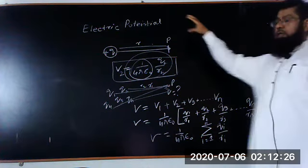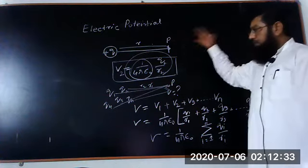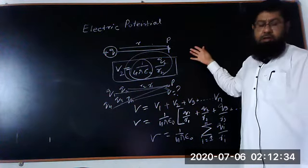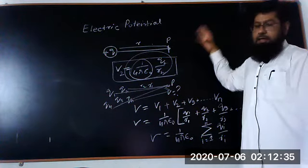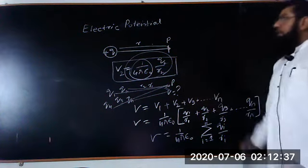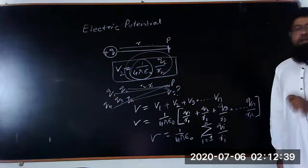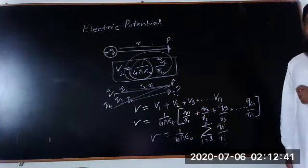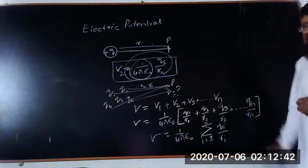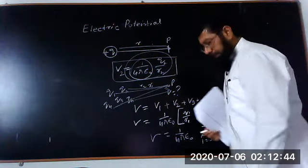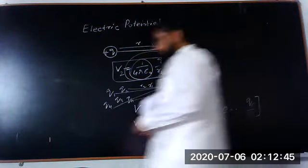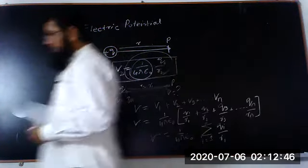This is how the electrical potential is calculated for multiple charges — this is what we covered in the last lecture, repeated here to recall your memory. Now what we are doing is calculating the electrical potential due to the dipole charges.